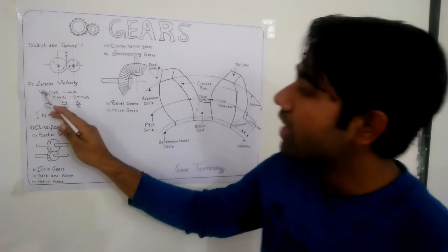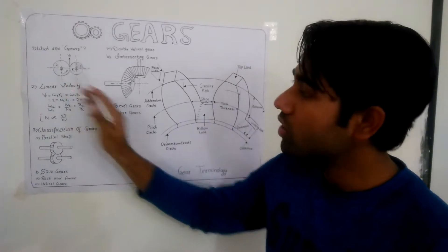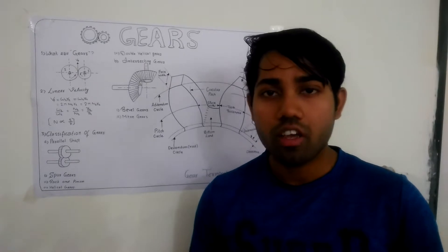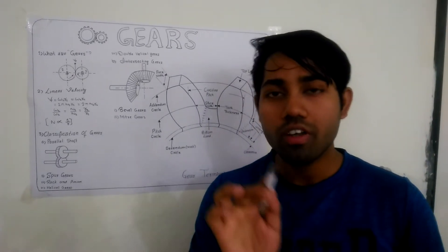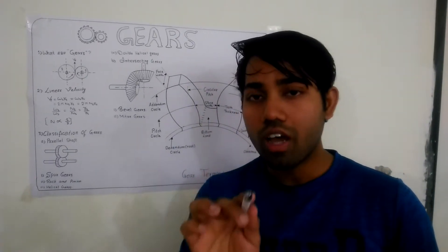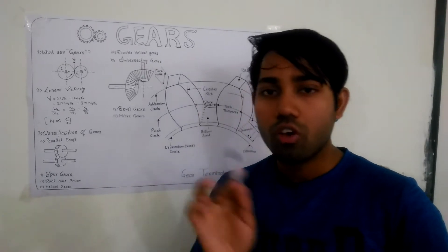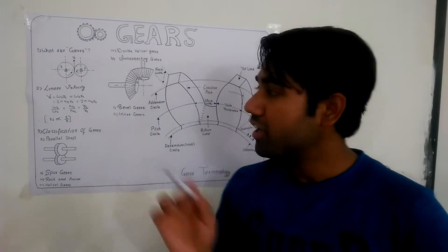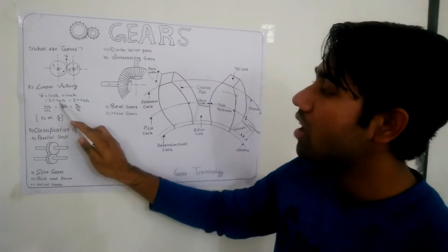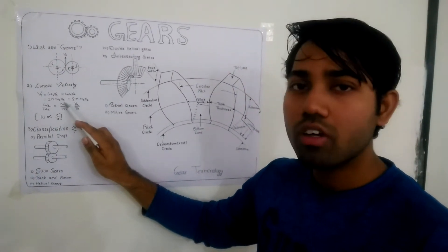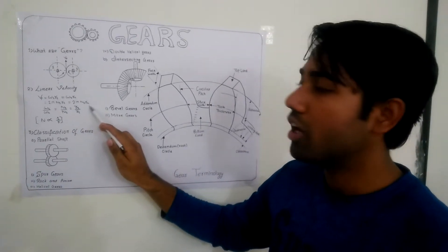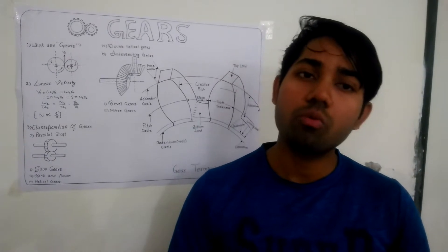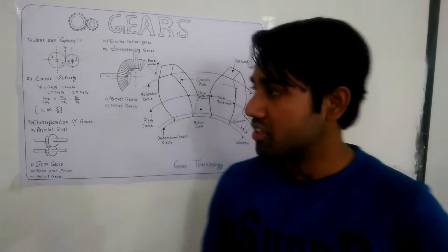Now, using the linear velocity of the gear: Vp is the velocity of the gear. Vp equals Omega1 times R1. Omega1 R1 equals Omega2 R2, where Omega is the angular velocity. This gives us 2π N1 R1 equals 2π N2 R2, meaning the number of rotations of a gear is inversely proportional to the radii of the disc.